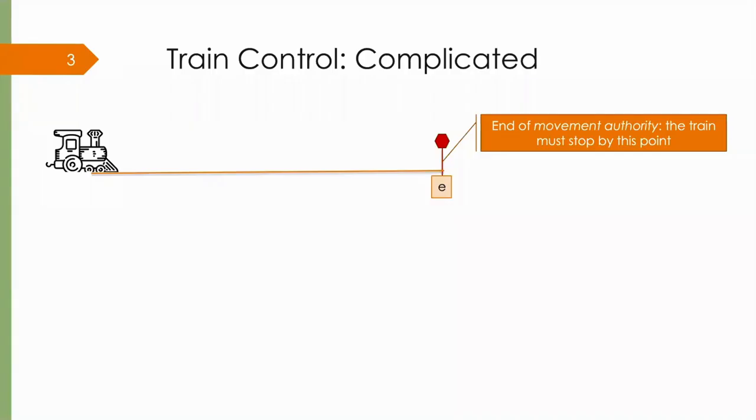Here's the statement of the problem. The train needs to stop by this point E, the end of movement authority. You might think this is a straightforward problem to solve. The track is one dimensional. There's a fixed end point. How hard could it be?